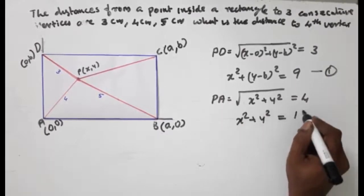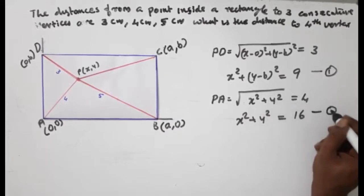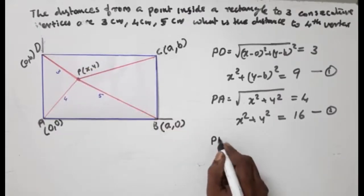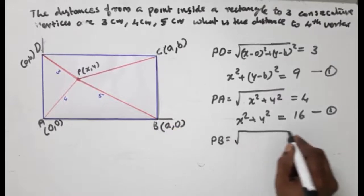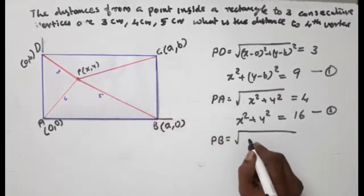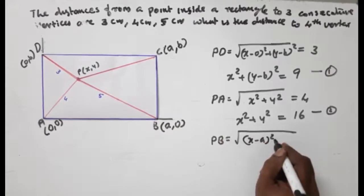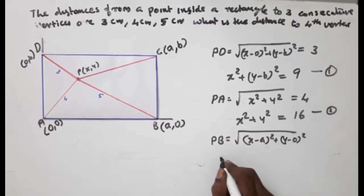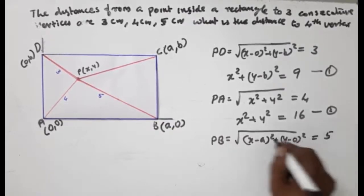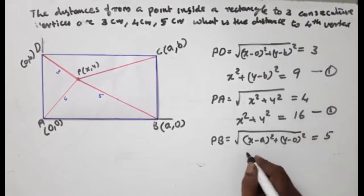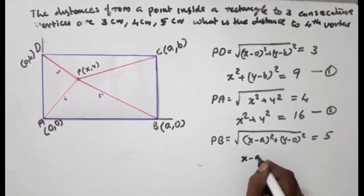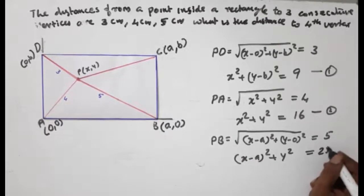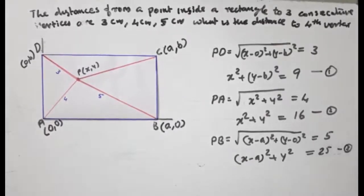x squared plus y squared equals 16. That is equation number 2. The distance PB: PB is the root of (x minus a) all squared plus (y minus 0) all squared. That value is 5, so (x minus a) all squared plus y squared equals 25. That is equation number 3. Here we have 3 equations.